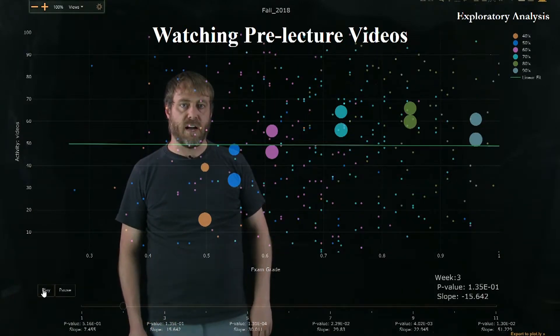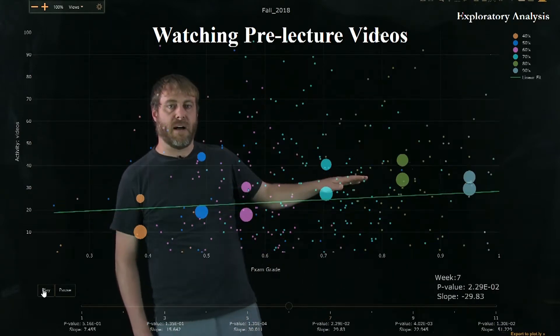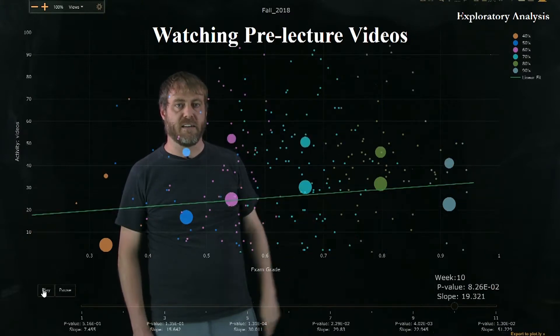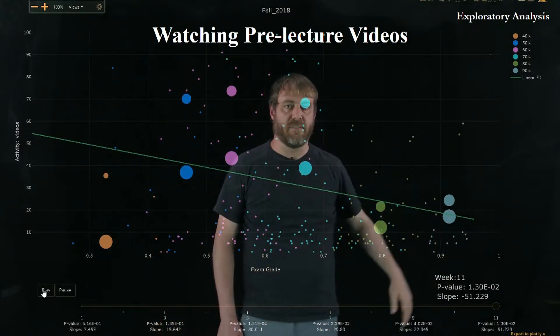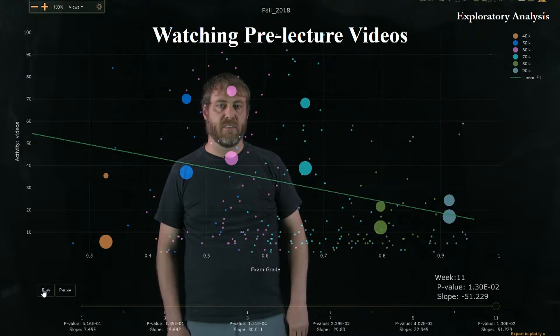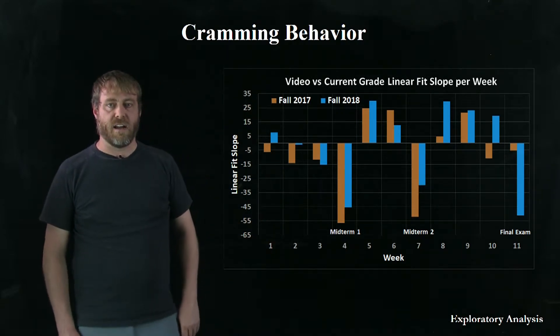You see that we start out with a little positive slope and then it goes negative. Then it goes really negative. It kind of comes back up positive, positive, negative again, positive, positive. And then when we get to our last week, week 11, it's definitely a negative slope. So there's a wide range of correlations, positive and negative, with watching pre-lecture videos and final grade.